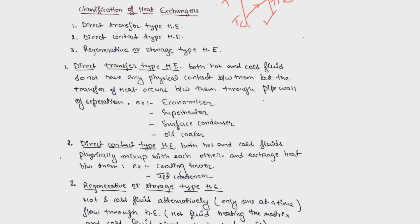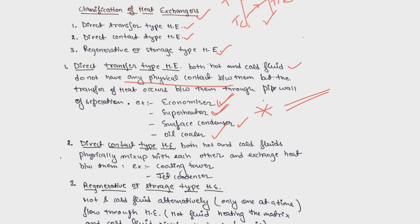Depending on the process involved, heat exchangers are classified as: direct transfer type, direct contact type, and storage or regenerative type. In direct transfer type heat exchangers, the hot and cold fluids have no physical contact — heat transfer occurs through a separating wall. Examples include economizers, superheaters, surface condensers, and oil coolers. For instance, in an economizer there is a pipe carrying water and a shell through which steam flows — separated by the pipe wall.